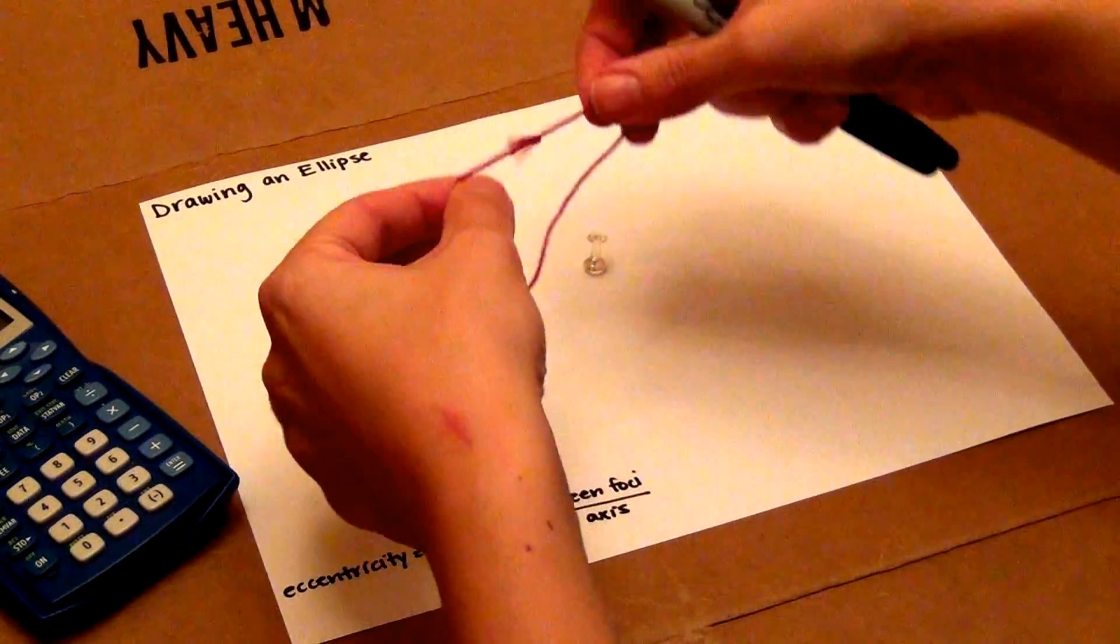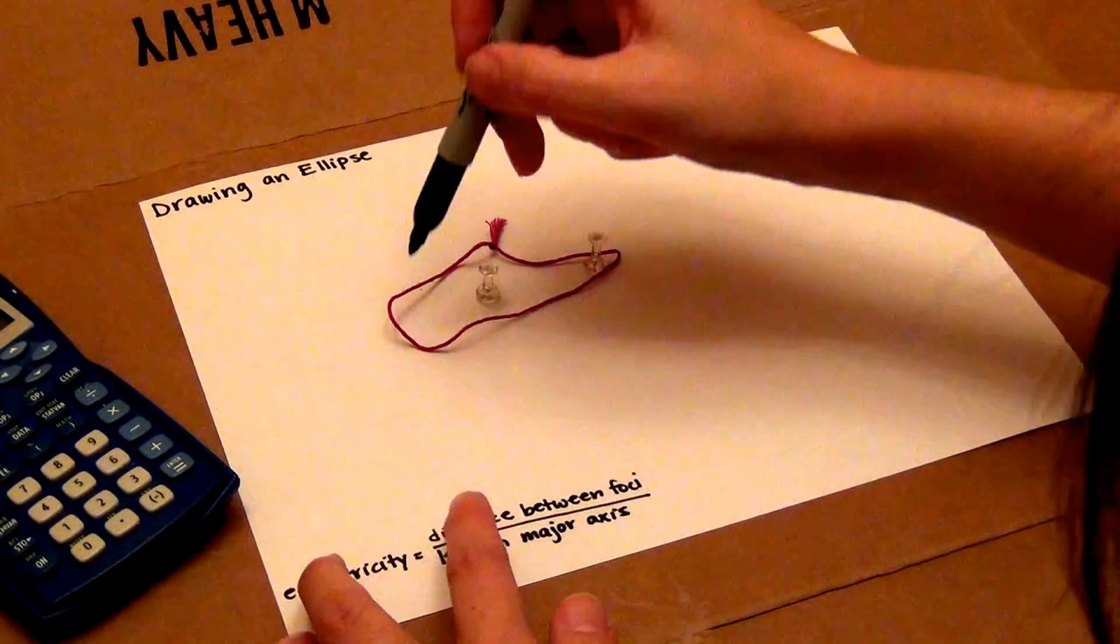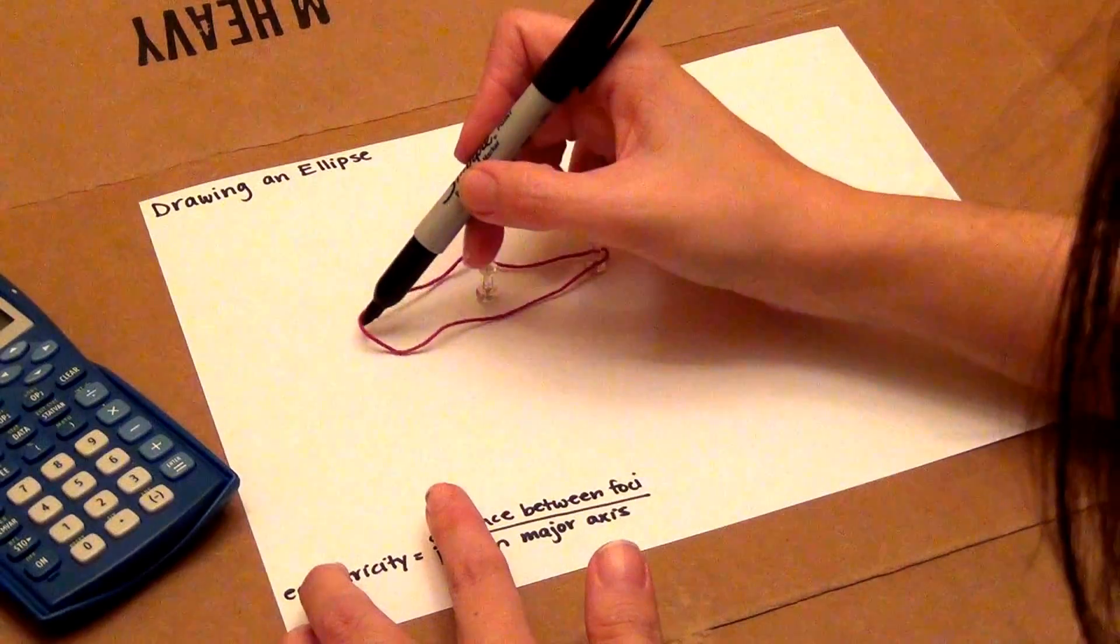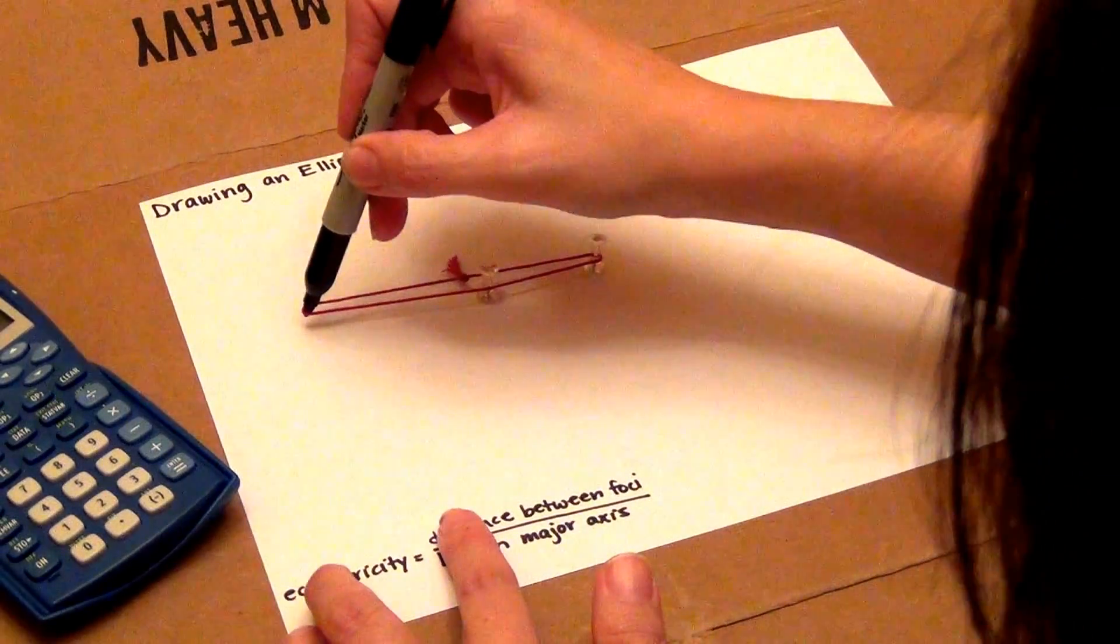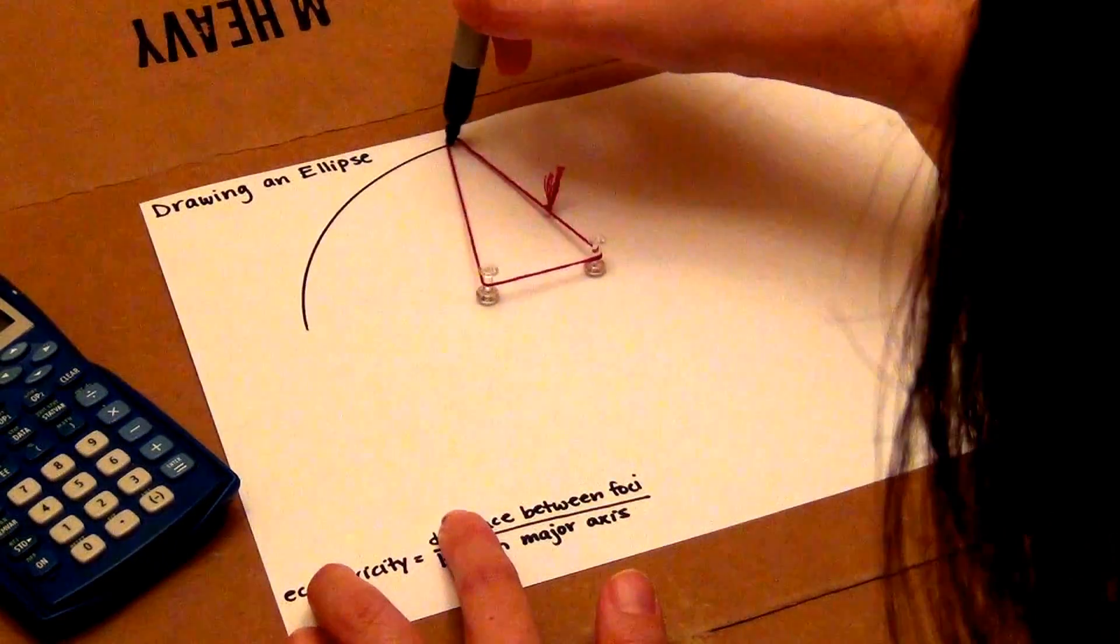Then you take your piece of string and place it over the thumbtacks. After that you take your pen or pencil or marker, place it in the loop of the string and pull the string out as far as you can and then draw your ellipse.